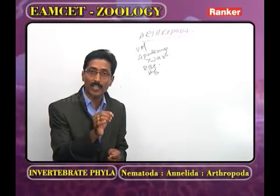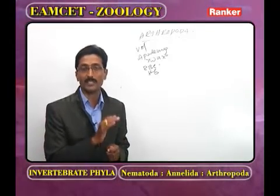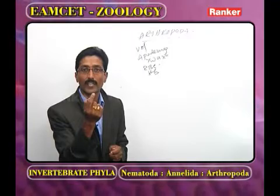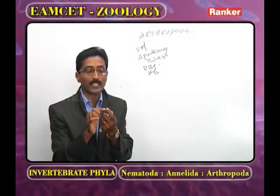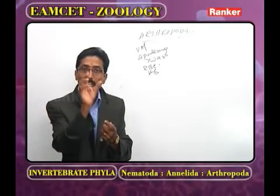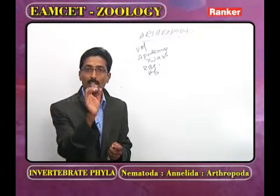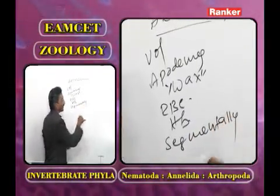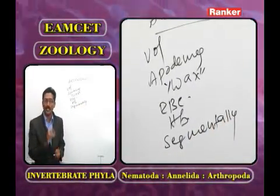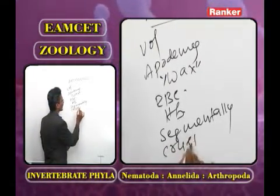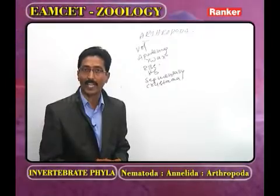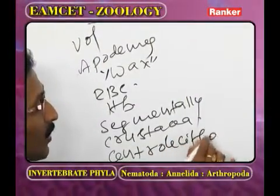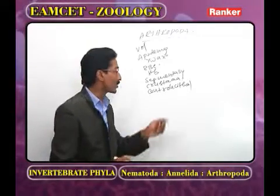In Arthropoda, the nerve ring is present around the esophagus in the head region. In all invertebrates, a double ventral solid nerve cord is present, with ganglia arranged segmentally. The majority of arthropods are unisexual, but in the class Crustacea, both unisexual and bisexual animals are present. The egg type in Arthropoda is centrolecithal — yolk is present at the center of the egg. The cleavage is meroblastic — only here and there the cytoplasm and nucleus divide.